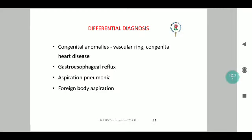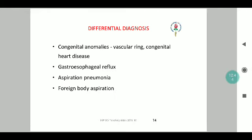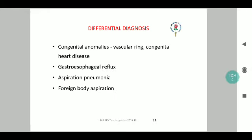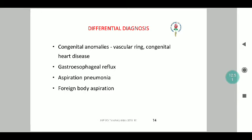Other differentials include gastroesophageal reflux as well as congenital anomalies such as a vascular ring or congenital heart disease, which require more detailed evaluation. Congenital heart disease should be considered if saturation continues to progressively worsen and does not respond despite supportive treatment.